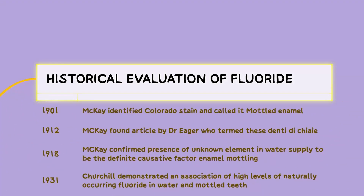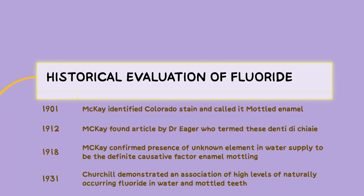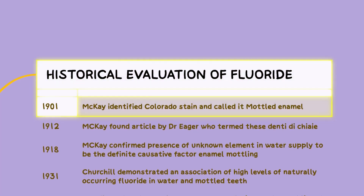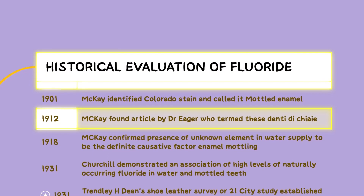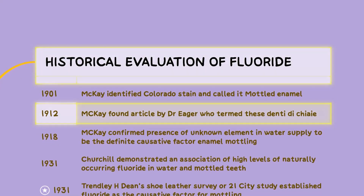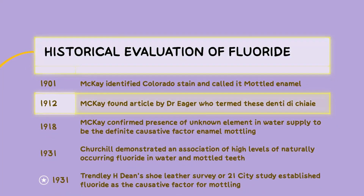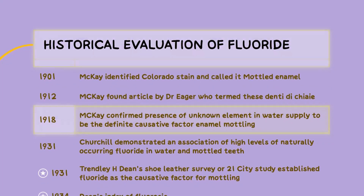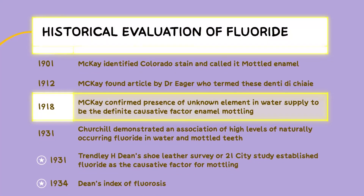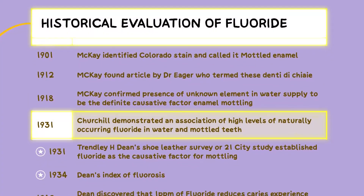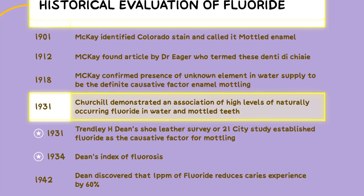Let's begin with the historical evaluation of fluoride, which spans several decades. Some major milestones are: In 1901, McKay identified the phenomenon of Colorado stain and termed it mottled enamel. In 1912, McKay discovered an article by Dr. Egger, who referred to the condition as Dentitiae. In 1918, McKay confirmed the presence of an unknown element in the water supply as the definite causative factor for enamel mottling. In 1931, Churchill demonstrated an association between high levels of naturally occurring fluoride in water and mottled teeth.